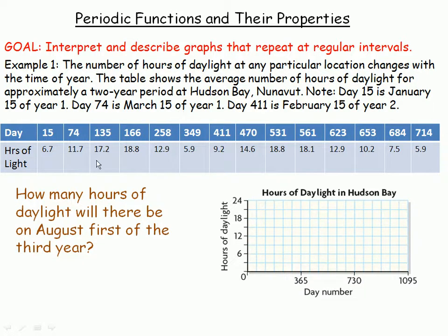The number of hours of daylight for Hudson Bay, Nunavut are shown here for a number of different days over a period of a couple of years. The day is in the top row and the number of hours of daylight are in the bottom row. If we plot those points, we will find that there is a smooth curve between them all. That's the 714, 5.9 hours point. And the question here is, how many hours of daylight will it be on August 1st of the third year?